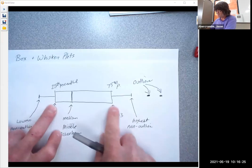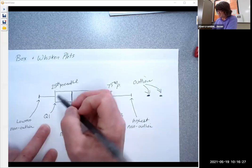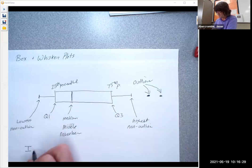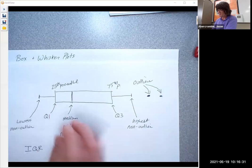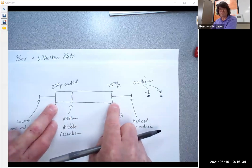So the distance from Q1 to Q3, this distance is called the interquartile range, or IQR. If you take the actual number of this and the number of this and subtract them, that width is called an IQR.